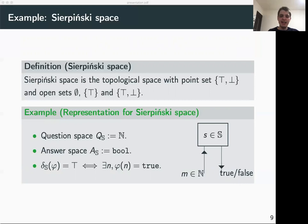A possible interpretation of this space is that it models terminating and non-terminating computation. If a computation terminates, there is some finite time m at which the computation stops, so we can return true — we know it stopped. But if the computation doesn't stop, we will never know and will always return false.